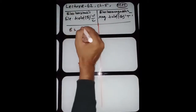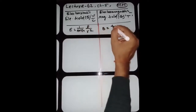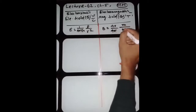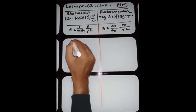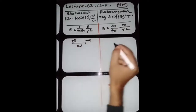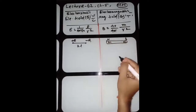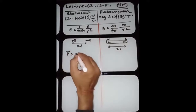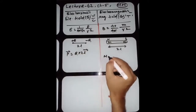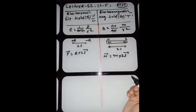In electrostatics, the electric field E equals 1 by 4π epsilon-naught times q by R-square. The magnetic field B equals mu-naught by 4π times M by R-square, where Q is replaced by M. For a dipole with charges plus Q and minus Q separated by 2L, the electric dipole moment P equals Q times 2L. The magnetic dipole moment M equals pole strength M times 2L.